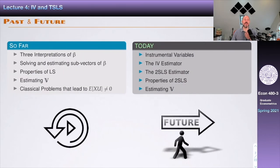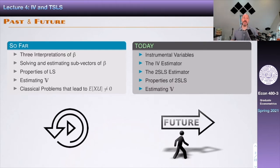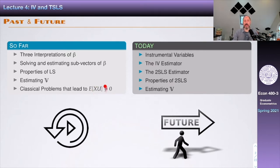So, recap. So far, we have talked mainly about how to interpret beta in the context of our regression, and then when the expected value of x·u was zero, we discussed how to solve for beta, how to estimate beta, how to do the same for sub-vectors, and then we described the ordinary least squares estimator and described its properties, as well as how to estimate the asymptotic variance that we call bold B. We discussed the three classical problems that lead to the expected value of x·u not being equal to zero — in other words, three classical problems that lead x to be endogenous. And so today, what we're going to talk about is instrumental variables as a way to deal with this problem of endogeneity. These instrumental variables, or IVs for short, will lead to the IV estimator and the two-stage least squares estimator.